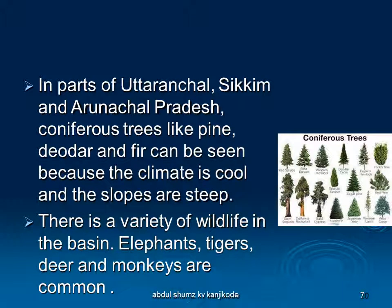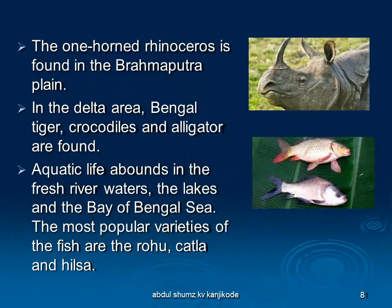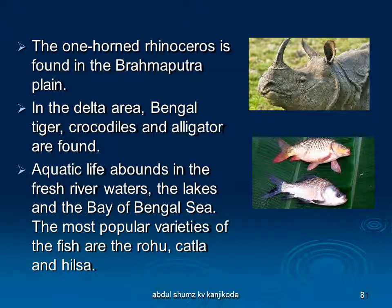A variety of wildlife is found here — for example, elephants, tigers, deer, and monkeys. The one-horned rhinoceros is very common in the Brahmaputra plain. In the delta area we have the Bengal tiger, crocodiles, and alligators. Aquatic life is also very abundant in the freshwater. The most popular varieties of fish found here are rohu, katla, and hilsa. Fish and rice is the staple diet of the people living in this region.